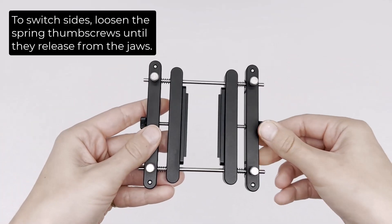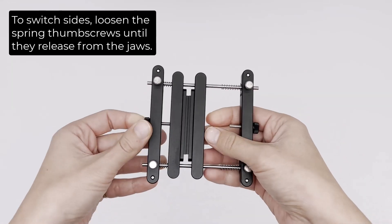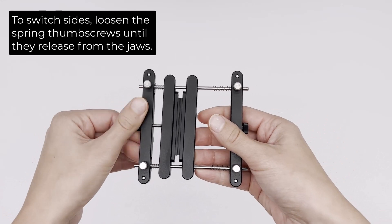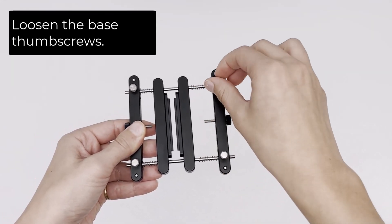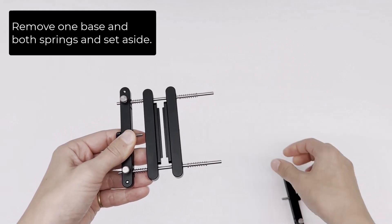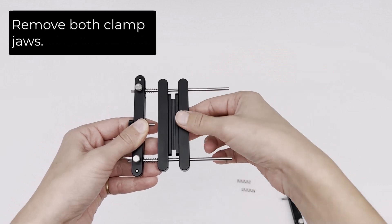To switch sides, loosen the spring thumb screws until they release from the jaws. Loosen the base thumb screws. Remove one base and both springs and set aside. Remove both clamp jaws.